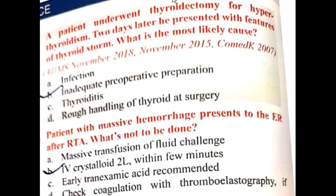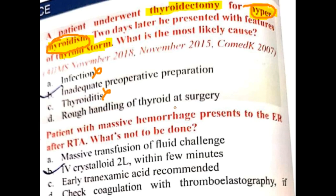A patient underwent thyroidectomy for hyperthyroidism. Two days later, he presented with features of thyroid storm. What is the most likely cause? There is no infection and no thyroiditis, since the patient is in a hyperthyroid state. Rough handling of thyroid at surgery would cause thyroid storm during surgery, not two days after. Since it occurred two days post-thyroidectomy, it is due to inadequate preoperative preparation.